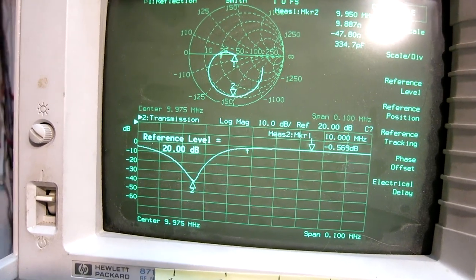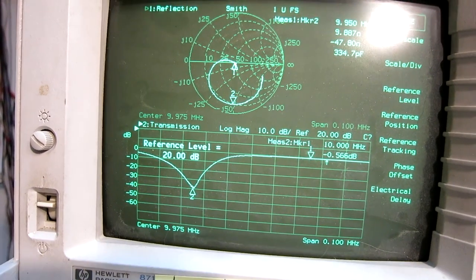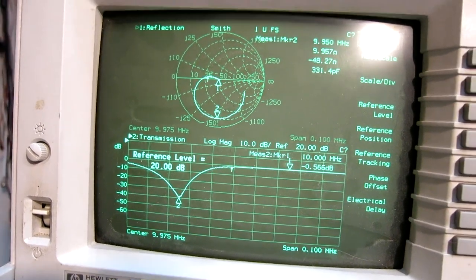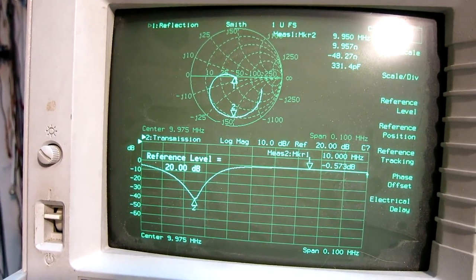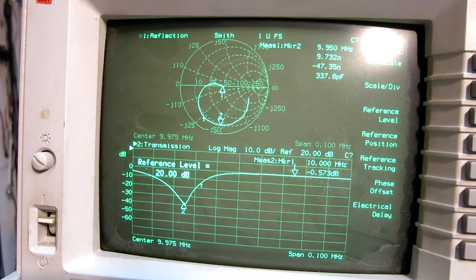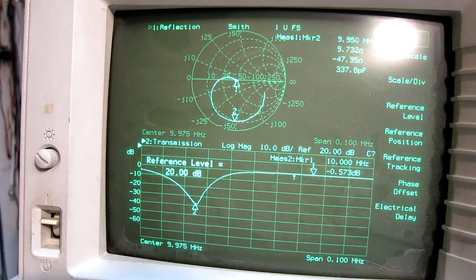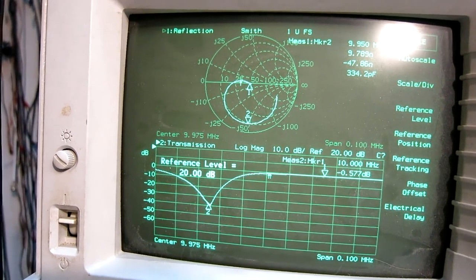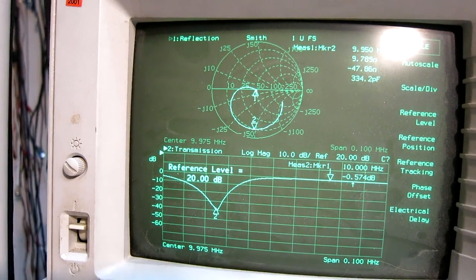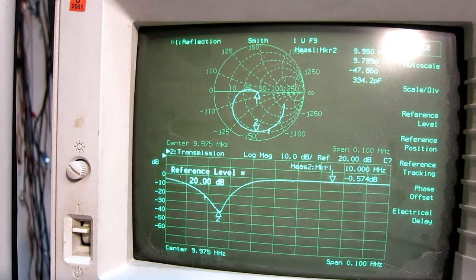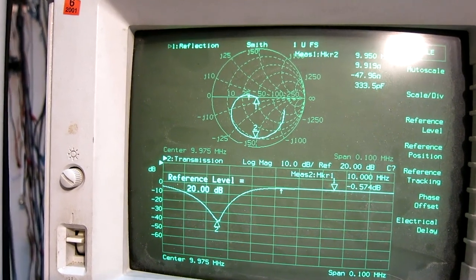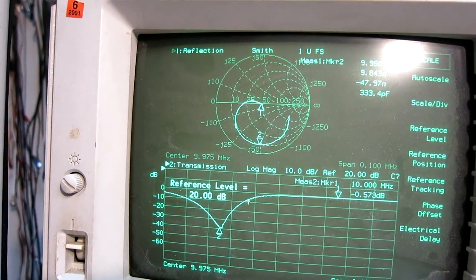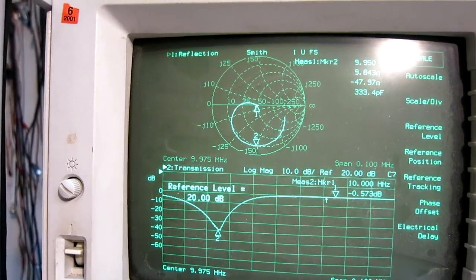At the notch the impedance is almost capacitive. It is 300 pf. I want to shift the phase from capacitive to high impedance resistive. It means I need a three-quarter wave cable here.